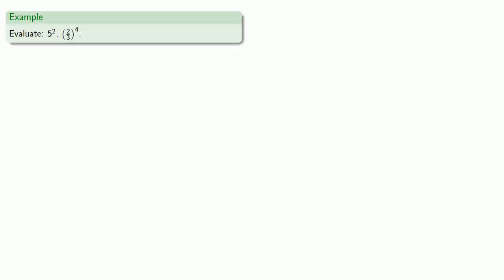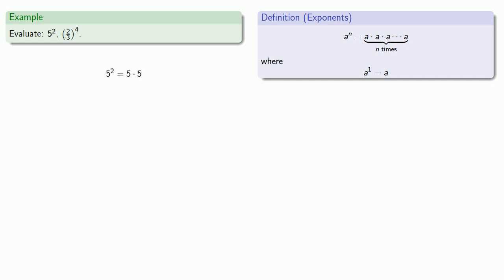So for example, let's evaluate 5 to power 2 and 2 thirds to power 4. We'll pull in our definition. Now 5 to power 2 says that we're going to take 5 and multiply it by itself twice. So 5 to power 2 is 5 times 5, and that's the same as 25.